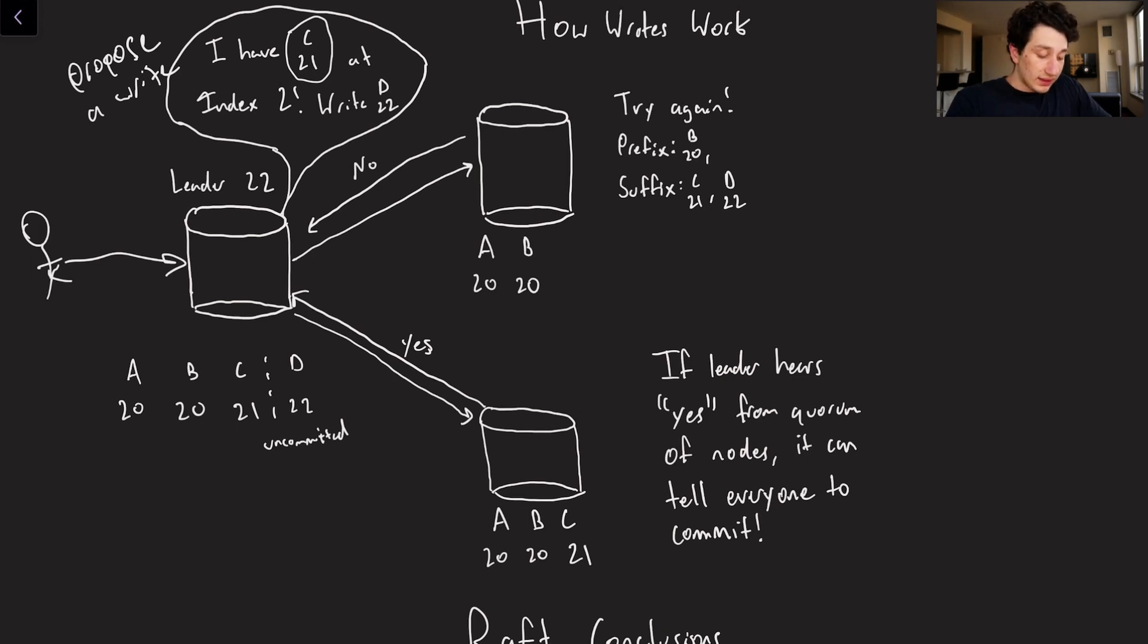Okay, so the leader says, I have the following write c21, meaning that basically, I am c21 in the position that is highest in the log up to this point. So that's right here. I have this as my most recent entry at index two, because this is 0, 1, 2. And then now in addition to that, write d22. So the first thing that it's going to do is send this to the top replica over here. And the top replica is going to reject this write. Why? Because it doesn't actually have at 0, 1, 2, it doesn't have c21. So it's going to say no, I don't agree with you up to this point, you cannot send me the write. Please try again.